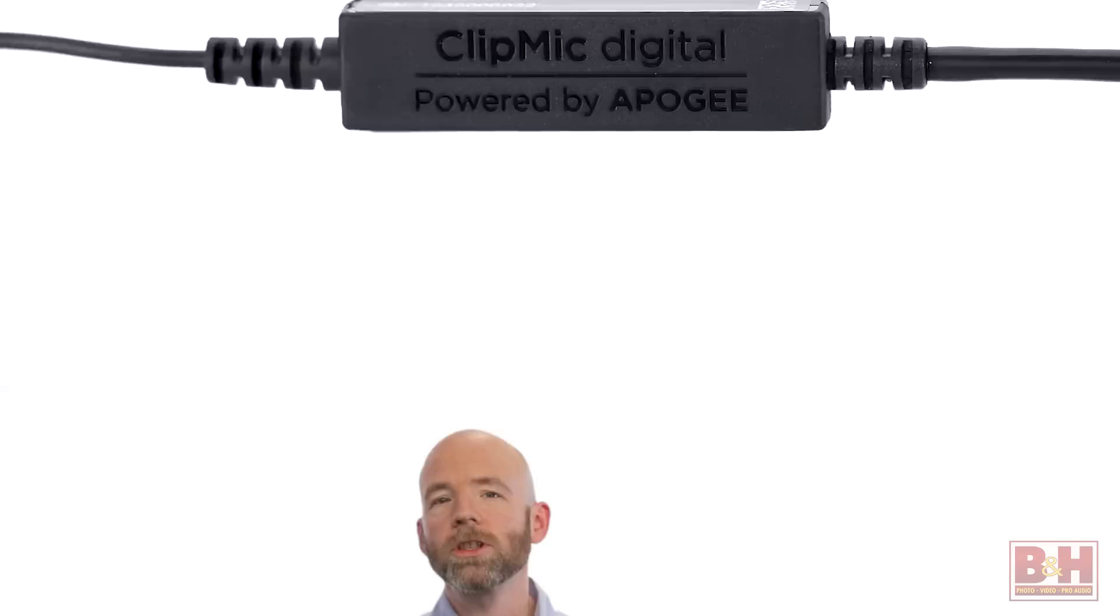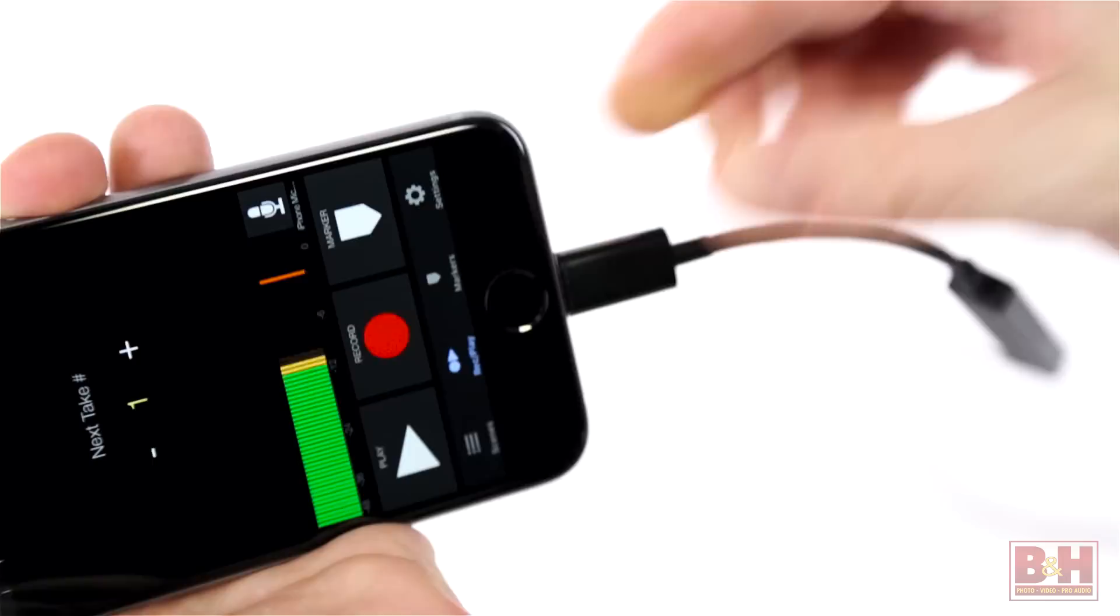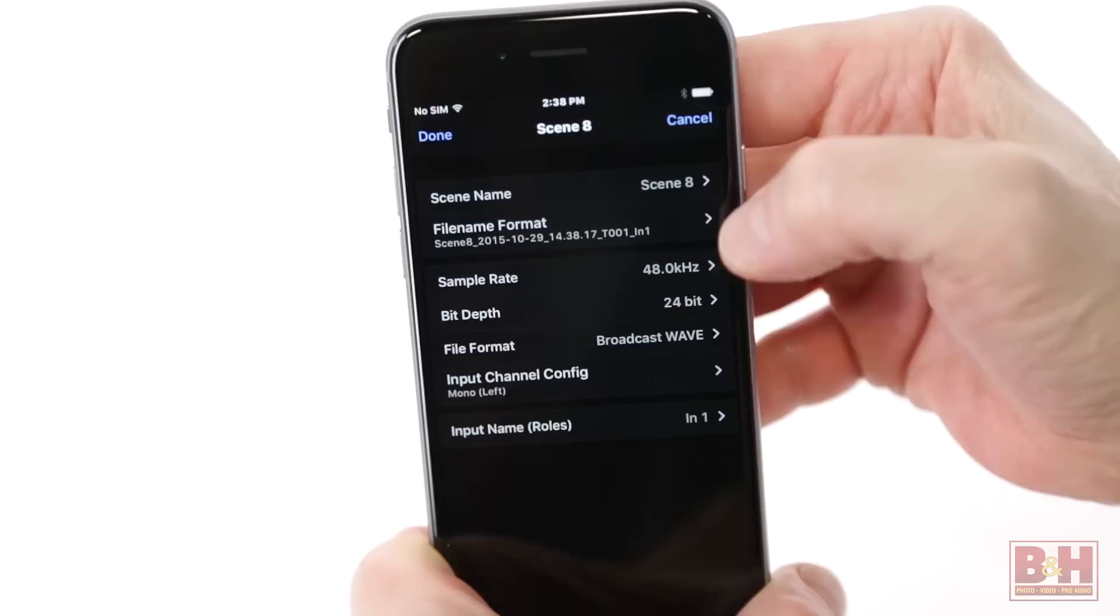Sennheiser partnered with Apogee for the ClipMic which features Apogee's terrific sounding pure digital preamp and audio converter, allowing it to plug into the lightning connector rather than the headphone jack, bypassing the phone's noisy electronics and reducing hiss.